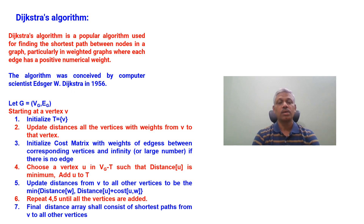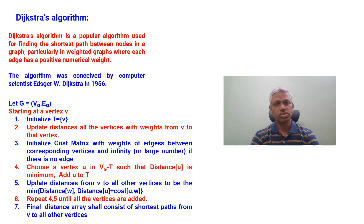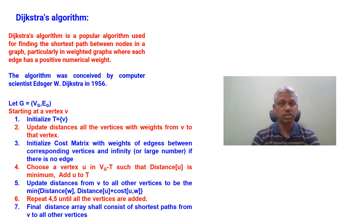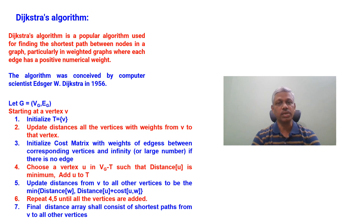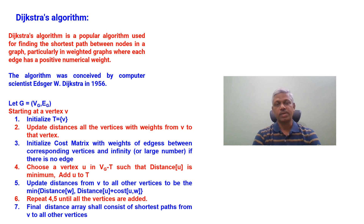Once u is added to T, update distances from v to all other vertices. For each vertex w, the distance is updated as the minimum of: the current distance of w, or the distance of u plus the cost of edge (u, w). This checks whether the path from v to w via u is shorter than the existing direct distance. If the distance via u is smaller, we update it as the new distance, and update both the distance array and cost matrix accordingly.